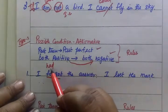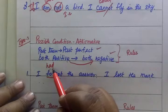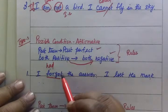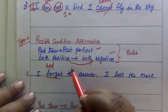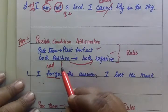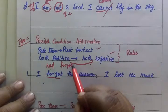This is past perfect. First, you write 'had.' So this is 'had,' and then the third form — 'forgotten.'